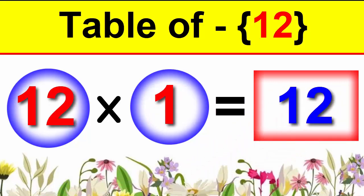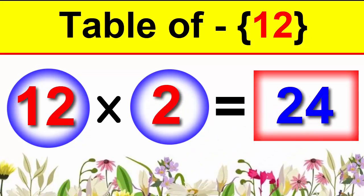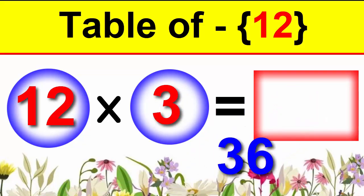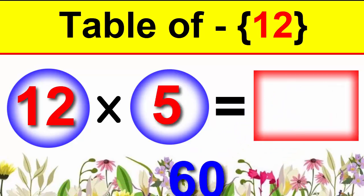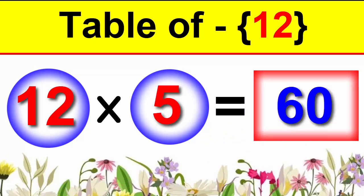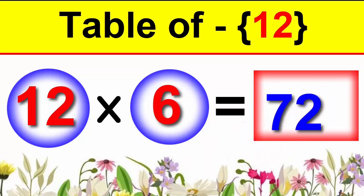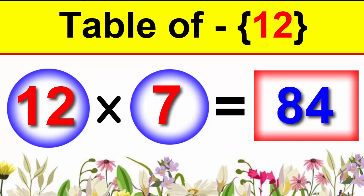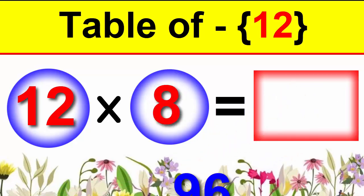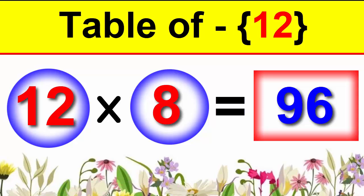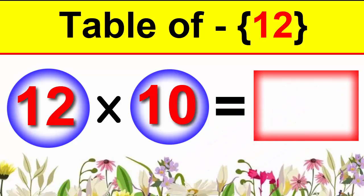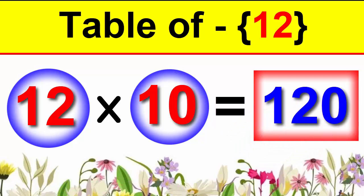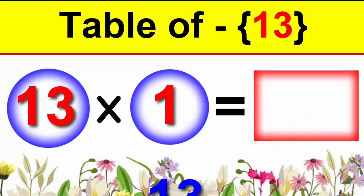12×1 is 12, 12×2 is 24, 12×3 is 36, 12×4 is 48, 12×5 is 60, 12×6 is 72, 12×7 is 84, 12×8 is 96, 12×9 is 108, 12×10 is 120.